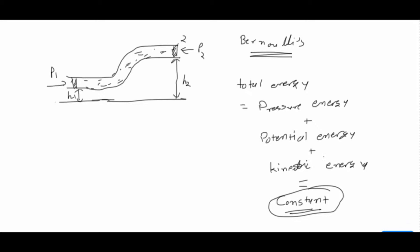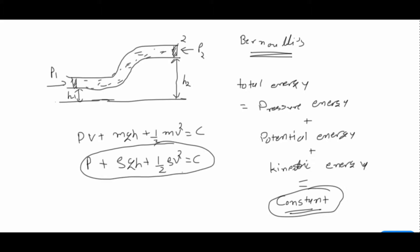The total energy — pressure, potential, and kinetic — is constant throughout the flow. Writing the formula: PV + mgh + half mv squared equals constant. Now dividing by volume V, we get energy per unit volume: P + ρgh + half ρv squared equals constant. This is Bernoulli's equation, where m divided by V is density ρ.